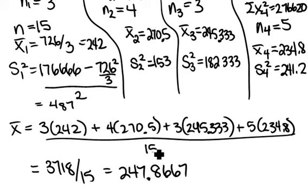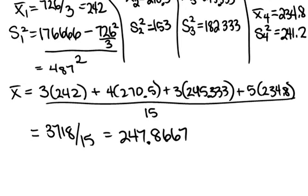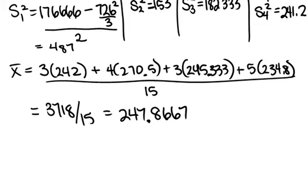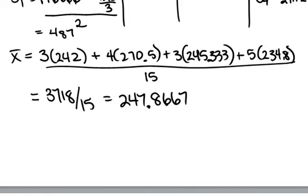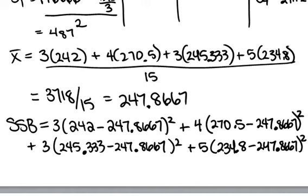We'll start by finding our SSB, which requires us to take our sample size times the X bar for that group minus the overall X bar, which is that 247 that we just calculated, squared. So we have the expression for SSB written out: it's your sample size from your group times the mean from that group minus the overall mean squared. You do that for each group, so we have four different terms here, and you add them all together. And what you'll find is that SSB for this problem is 3025.27.